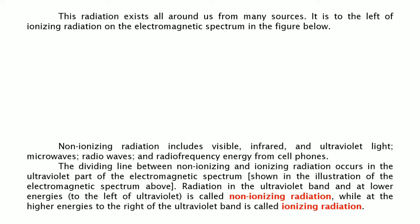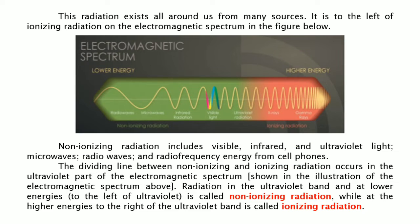This radiation exists all around us from many sources; it is to the left of ionizing radiation on the electromagnetic spectrum, as shown in the figure. Non-ionizing radiation includes visible light, infrared radiation, ultraviolet light, microwaves, radio waves, and radio frequency energy from cell phones. The dividing line between non-ionizing and ionizing radiation occurs in the ultraviolet part of the spectrum. Radiation in the ultraviolet band and at lower energies is called non-ionizing, while at higher energies to the right of the ultraviolet band it is called ionizing radiation.